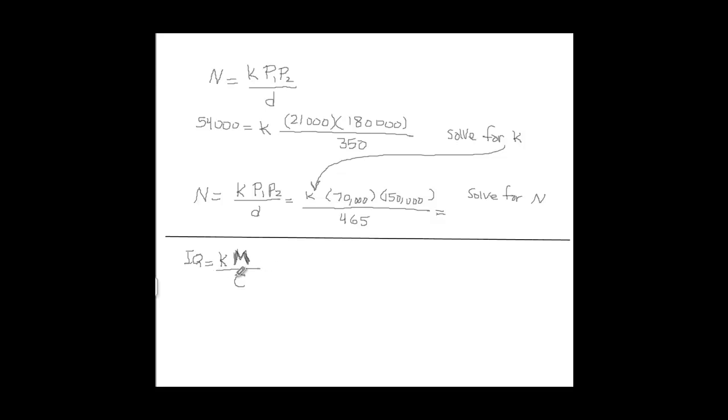So we need to know some initial condition again. We know when IQ is 120, m is given to us as 15, c is given to us as 25. And just simply solve for k.